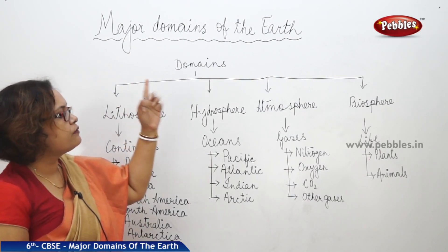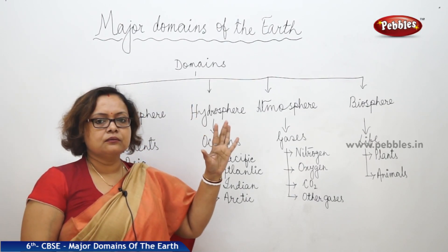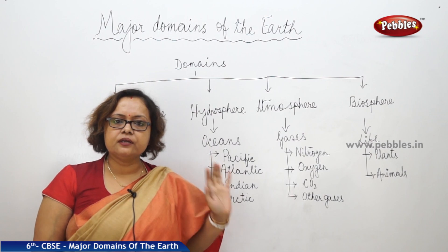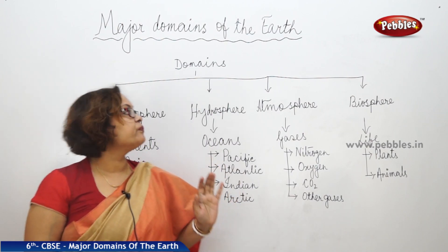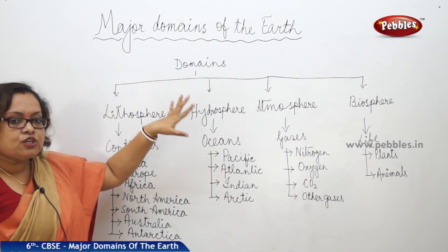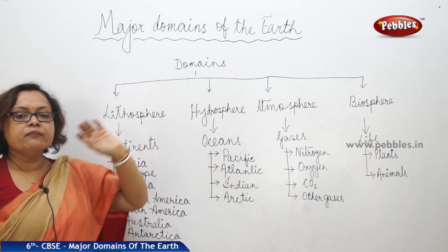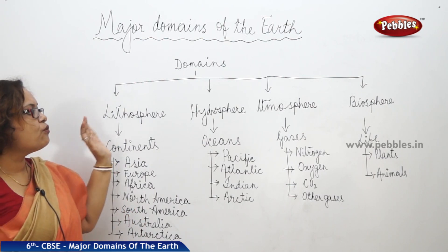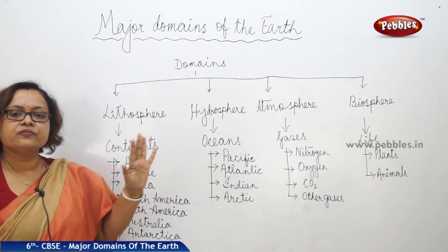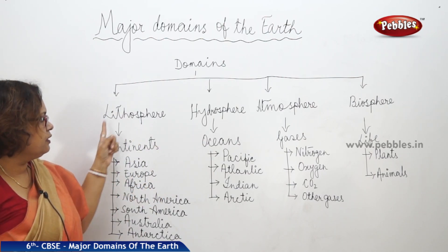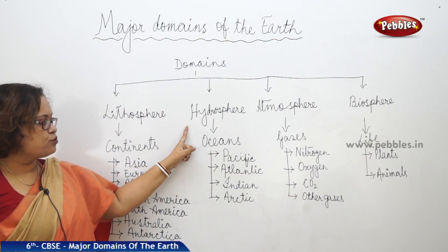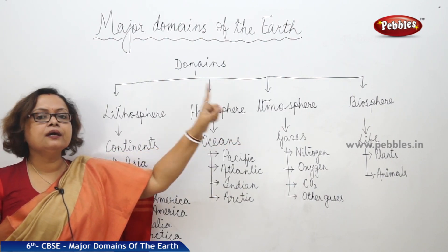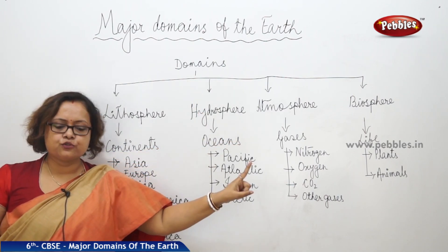The chapter we are discussing is the major domains of the earth. The domains of the earth are majorly divided into four parts: lithosphere, hydrosphere, atmosphere, and biosphere.